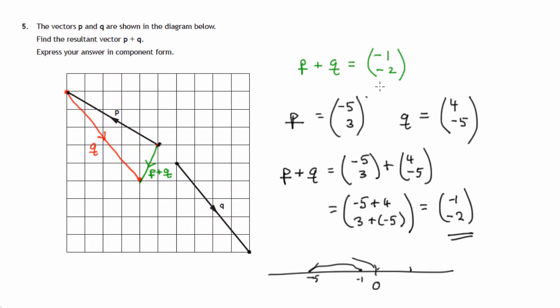Which agrees with the components that we got before. So either draw the vector sum P plus Q, giving you P plus Q, or write down the two sets of components and add them to get the resulting components.